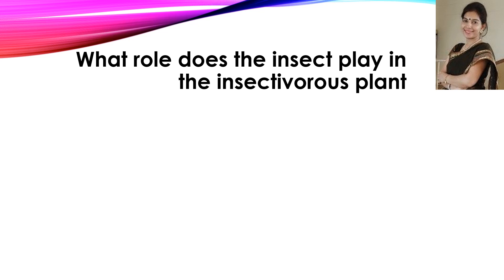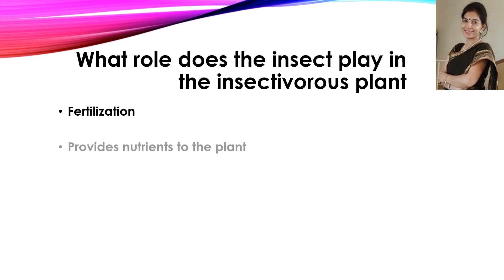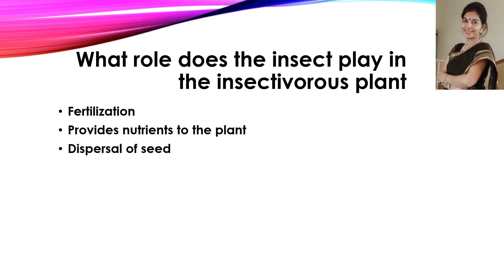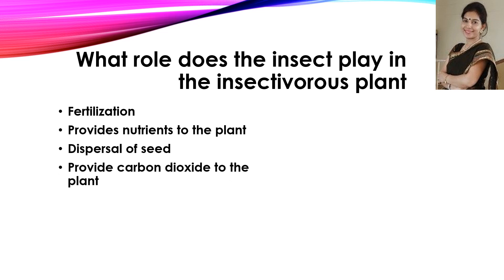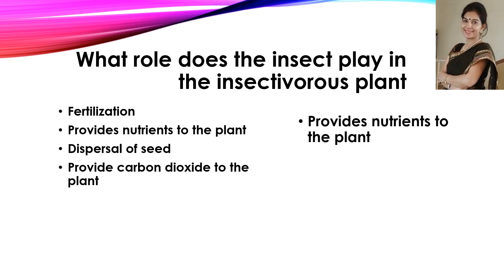Now the next question: what role does the insect play in the insectivorous plant? These are your options. The correct answer for this question is: it provides nutrients to the plant.